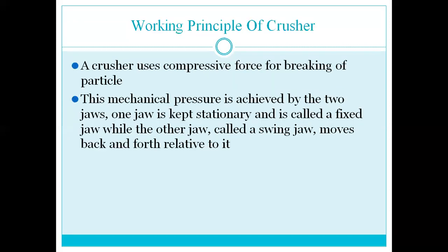A crusher uses compressive force for breaking of particles. The pressure is achieved by two jaws. One jaw is kept stationary and is called the fixed jaw, while the other jaw, called the swing jaw, moves back and forth relative to it.